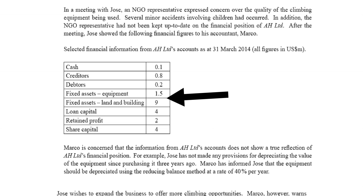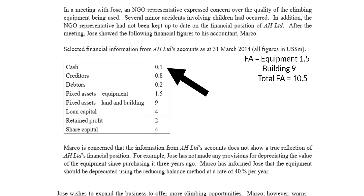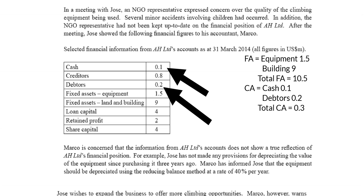Putting this into our balance sheet, the fixed assets section shows equipment at 1.5 million, buildings at 9 million, and total fixed assets of 10.5 million. Moving to current assets, they have cash of 0.1 million and debtors of 0.2 million — debtors being trade credits issued to customers where payment is still awaited. So they have two current assets totalling 0.3 million. Our balance sheet now shows total fixed assets of 10.5 and total current assets of 0.3.